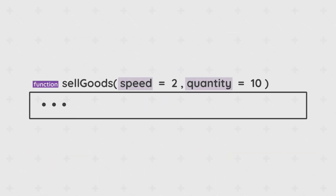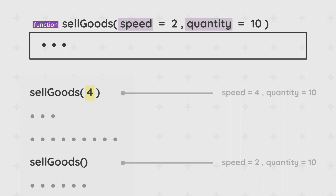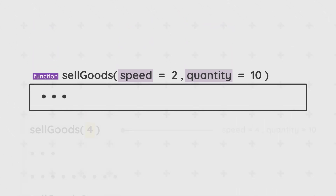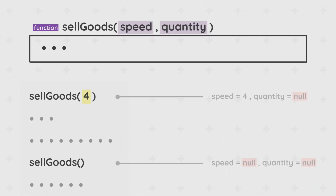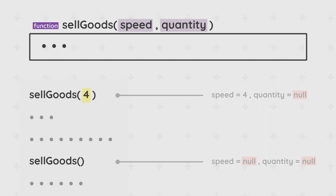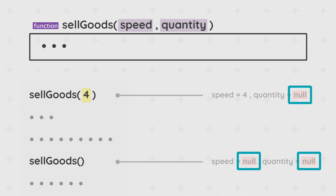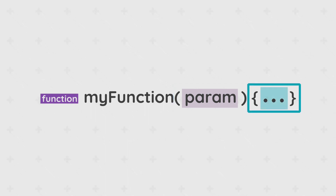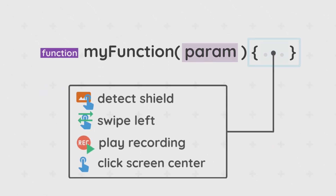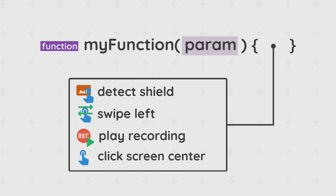Parameters can also be given default values in the case where no value was passed during the function call. If no values are passed and there are no default values, the parameters will take a value known as null. Null is another data type usually assigned to undefined variables — they can cause a lot of problems and errors, so be sure to avoid them. Functions generally look like this: the parameters are placed between the brackets, and the body of the function is between the curly braces. The body in our case contains the objects and actions we include into the function.